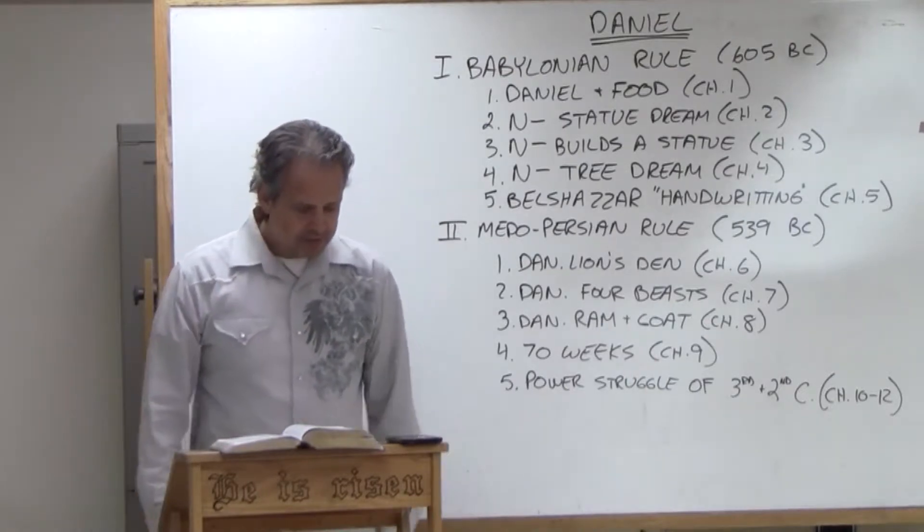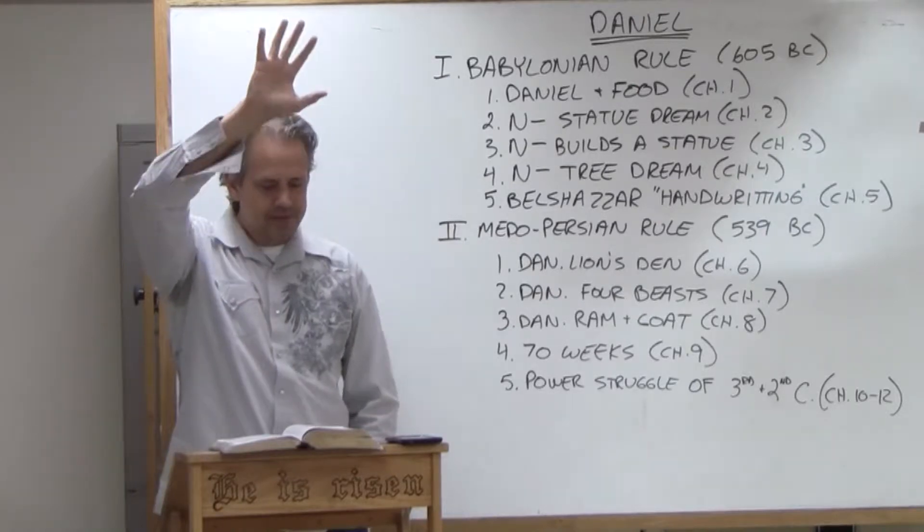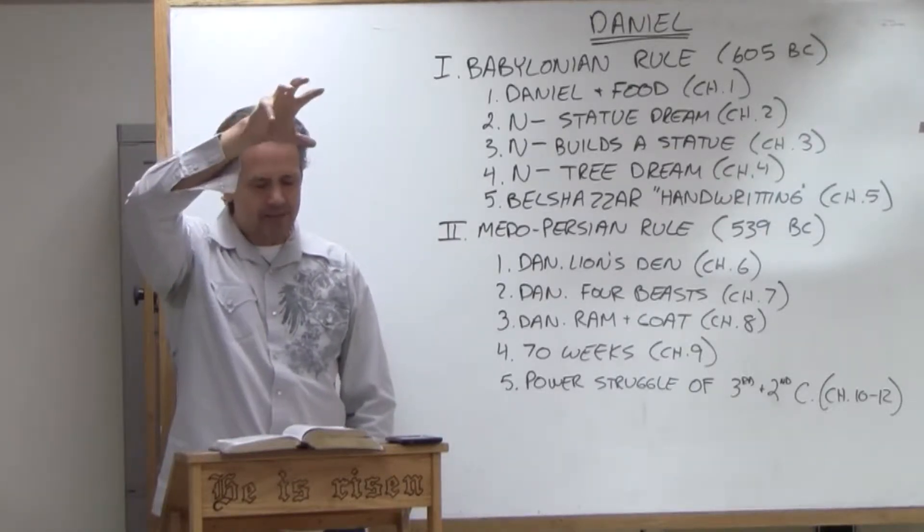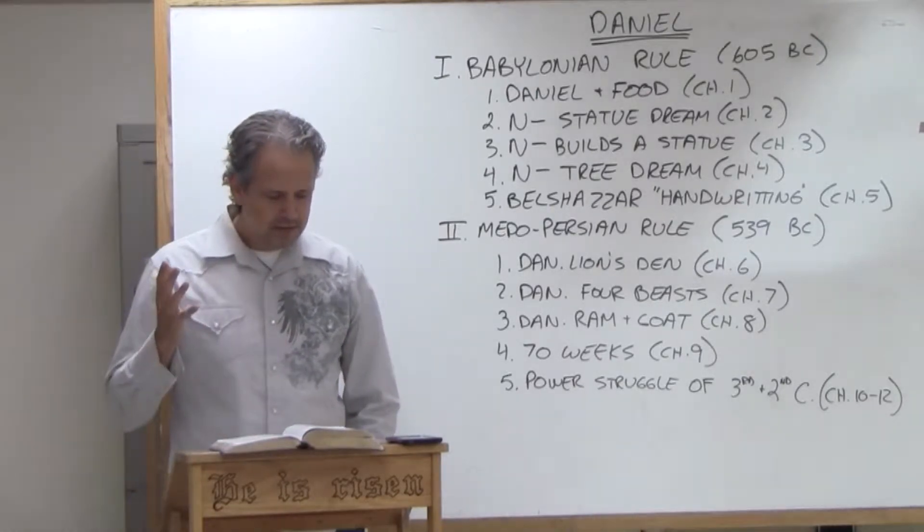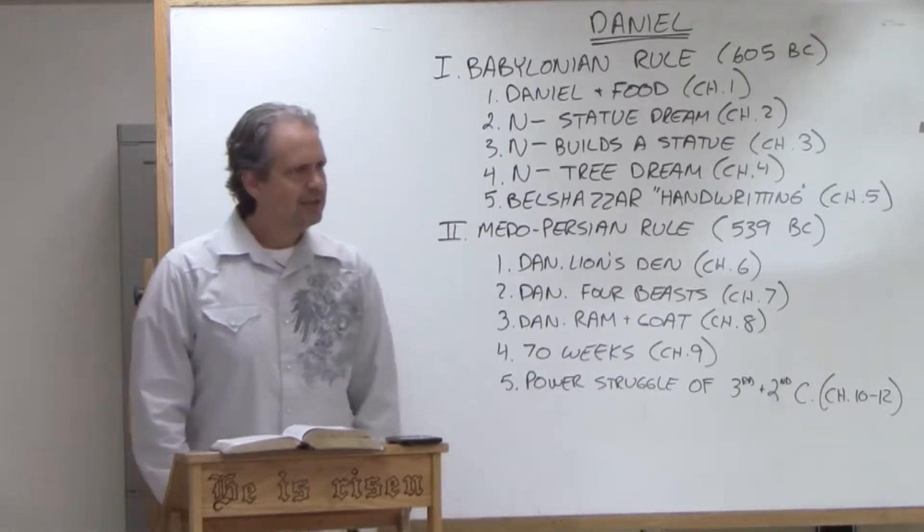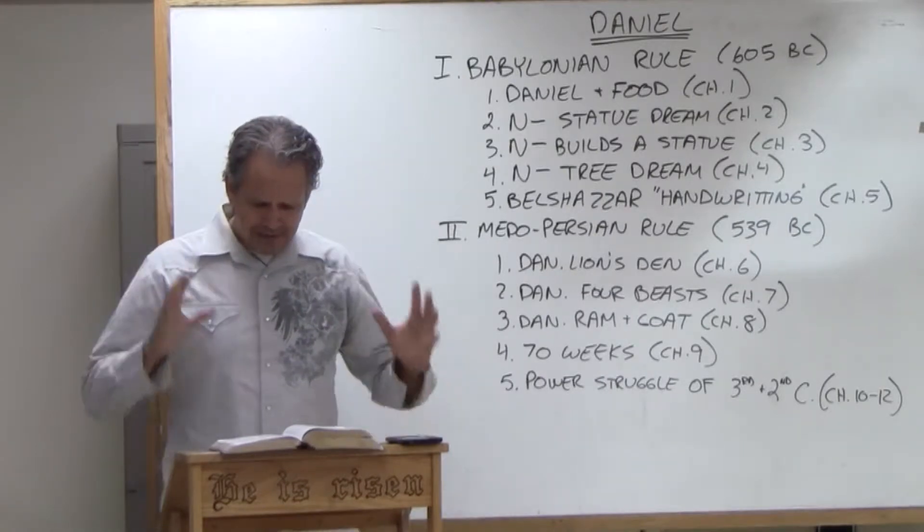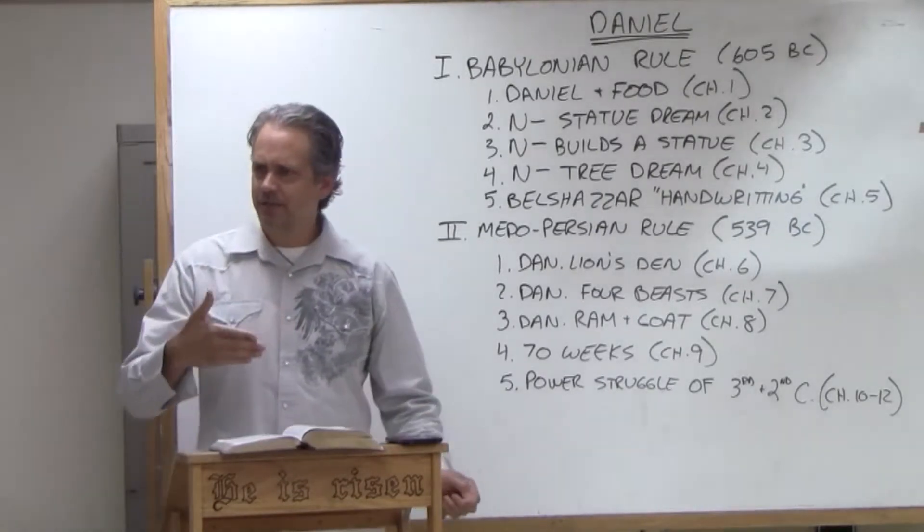Egypt goes up in 609, King Necho II goes up from Egypt to Carchemish to help Assyria fight against the Babylonians. And here's the weirdest thing of all, this is in 2 Kings chapters 24 and 25. Josiah decides to go out and get involved.